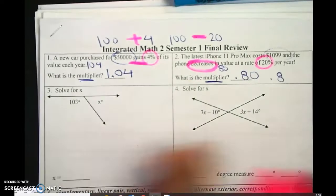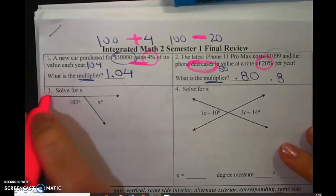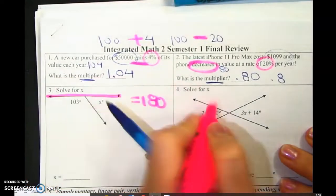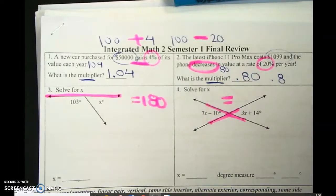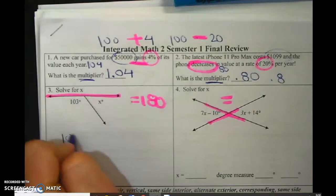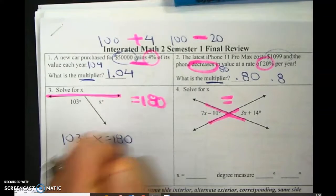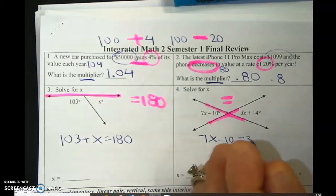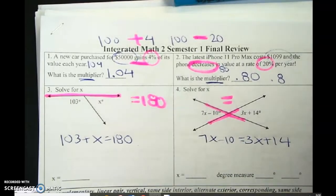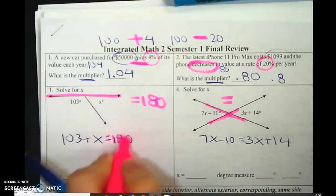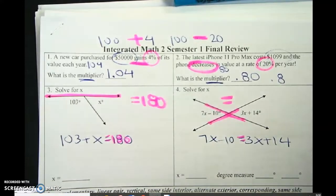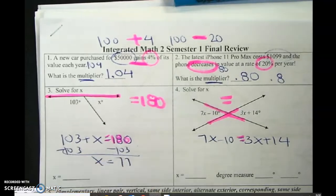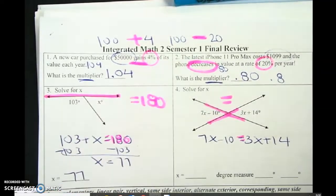These two are also similar, but the difference is when you do this one, it equals 180. And when you do this, these are vertical angles. They are equal. So I'm going to go 103 plus x equals 180. And this one, I set it up as 7x minus 10 equals 3x plus 14. So this one equals 180. That one is just equal. So now I solve.